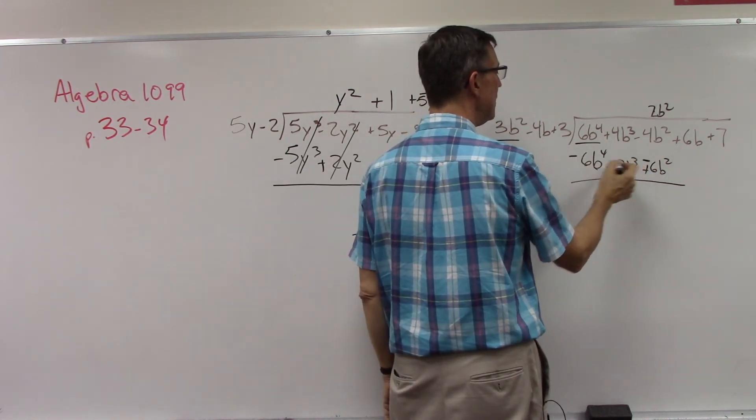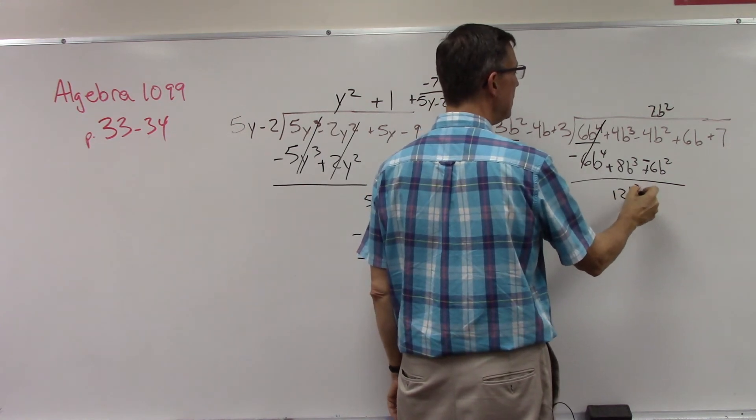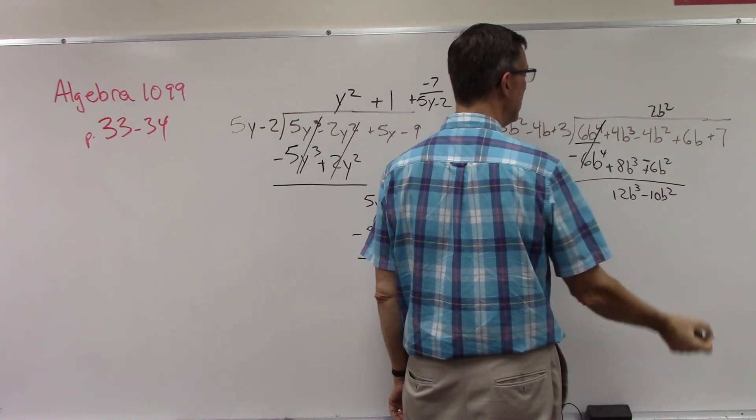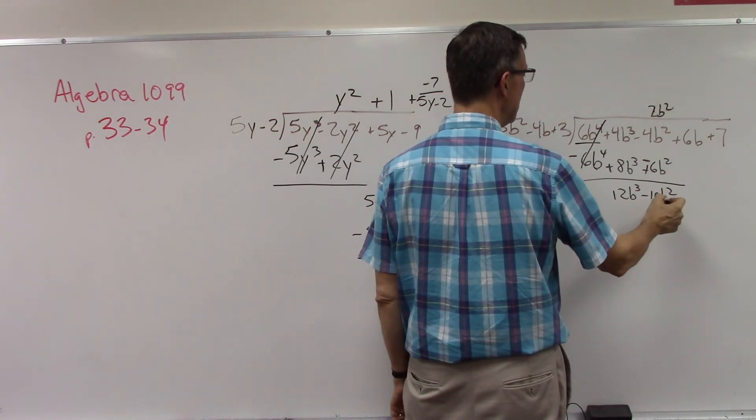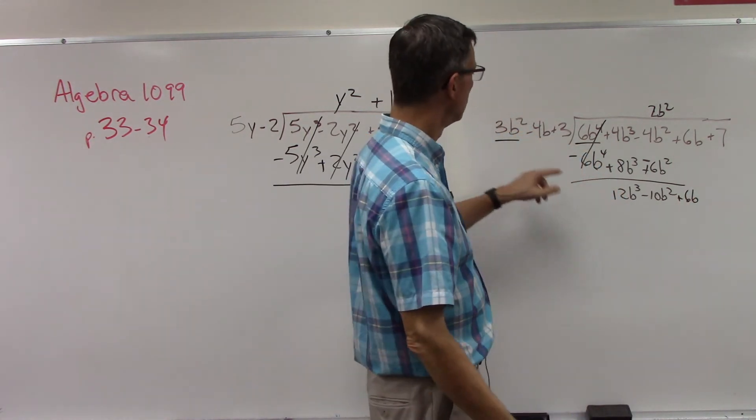That cancels. Here I get 12b to the third minus 10b squared. And then we'll bring down the next term, which is 6b. And I'm going to let you take it from there.